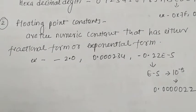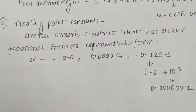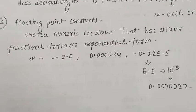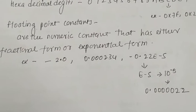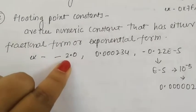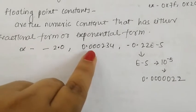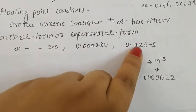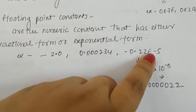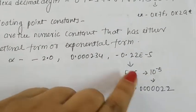Next is floating point constants. Floating point constants are numeric constants that can have either a fractional form or exponential form, like -2.0 or 0.00024. For example, we can write 10 to the power minus 5 in exponential notation.